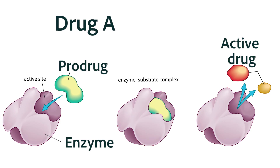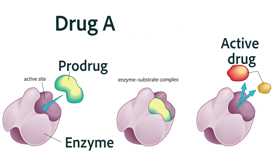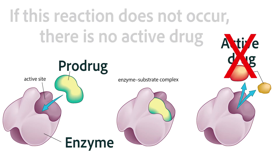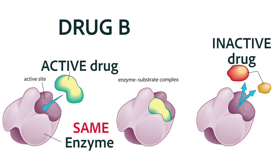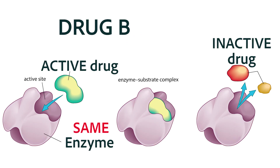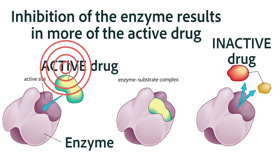The enzyme may change drug A from a prodrug to an active drug. When grapefruit juice inhibits the enzyme, in that case the prodrug would remain inactive. Conversely, the enzyme may change drug B from a highly active drug to an inactive drug. Inhibition of the enzyme, in that case, will allow more of the highly active drug to remain in the system for longer.